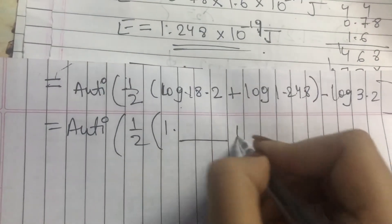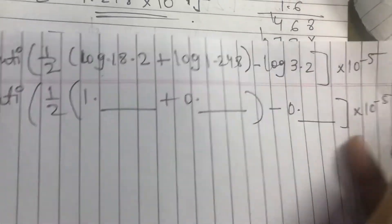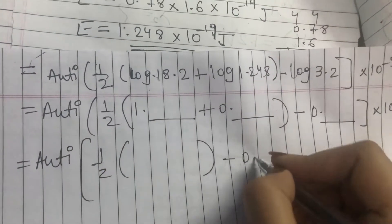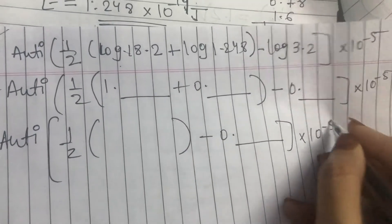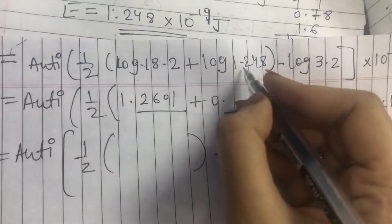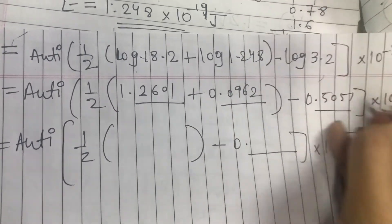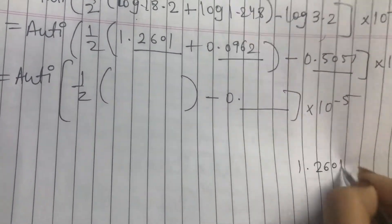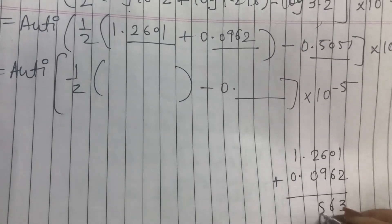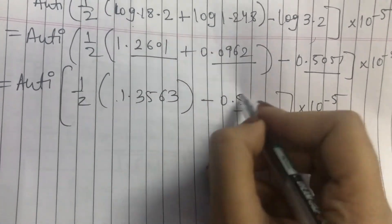Taking the log table values: log of 18.2 is 1.2601, log of 1.248 is 0.0962, and log of 3.2 is 0.5051. Adding 1.2601 plus 0.0962 gives 1.3563. Now subtracting 0.5051 from 1.3563 gives 0.8512. With the half power applied, we compute antilog of half into 0.8512, multiplied by 10 raise to minus 5.